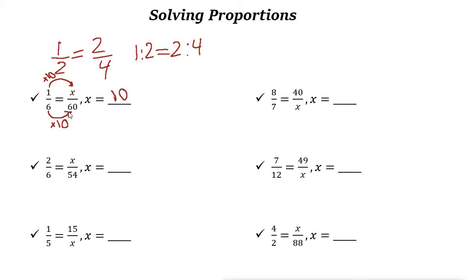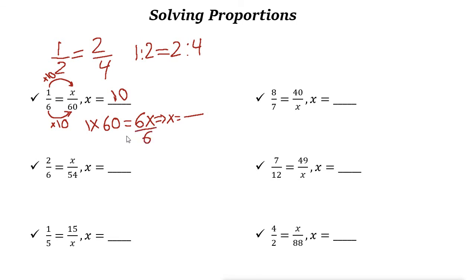But another way — this is by finding the relationship between the denominators and numerators. We could also solve this using cross multiplication. Based on the cross multiplication rule: first numerator times the next denominator — so 1 times 60 equals the next numerator times the first denominator, 6 times x, which is 6x. We're looking for the number that when multiplied by 6 gives 60. You can divide both sides by 6, so x equals 60 over 6, which is 10. That's the cross multiplication method.